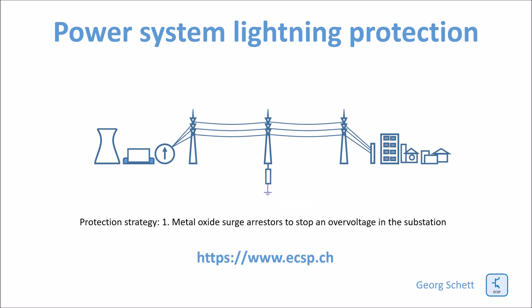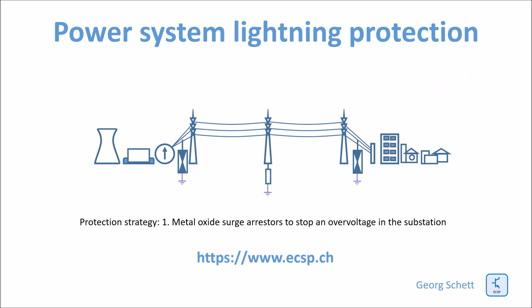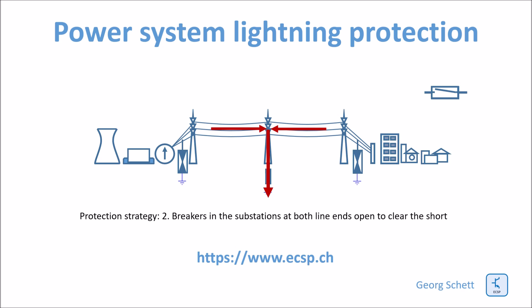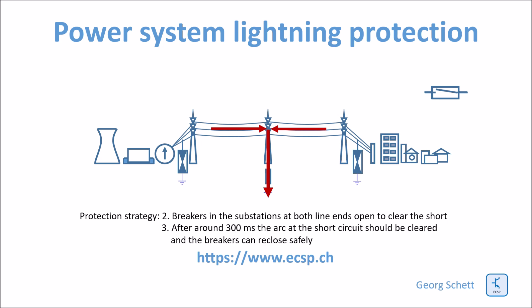The protection strategy is first to install metal oxide surge arresters at both line-ends, normally at the substation entrance. The second measure is to have breakers at both substations at the line-ends; these breakers interrupt the short-circuit currents before they can cause damage.